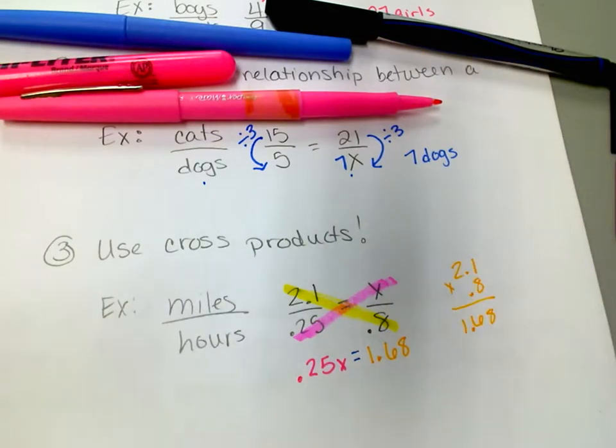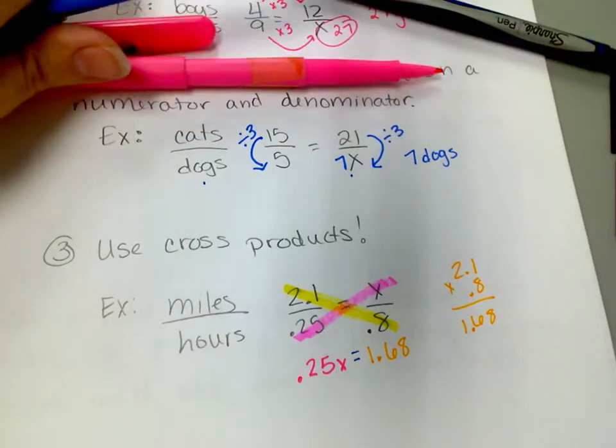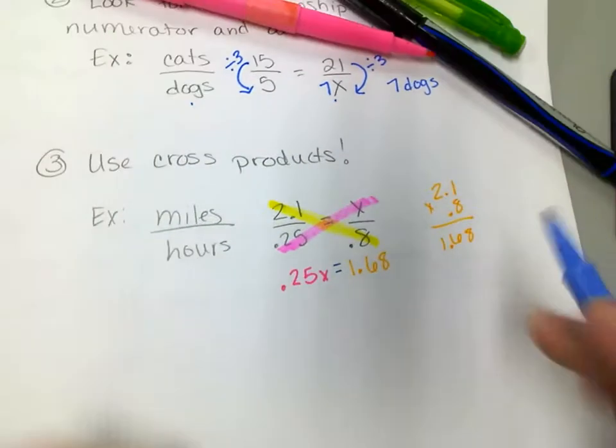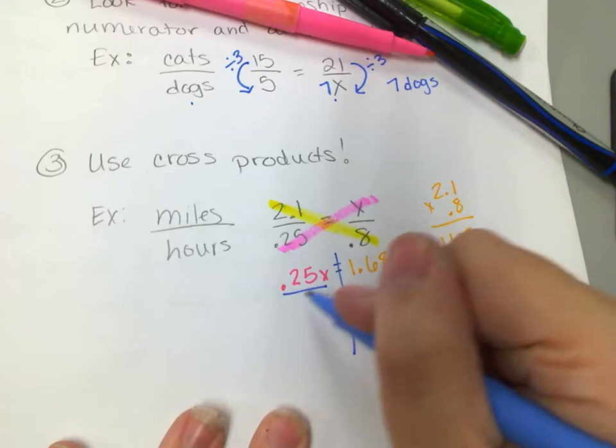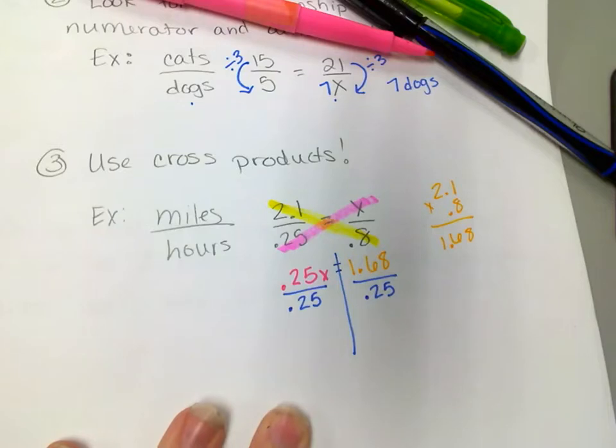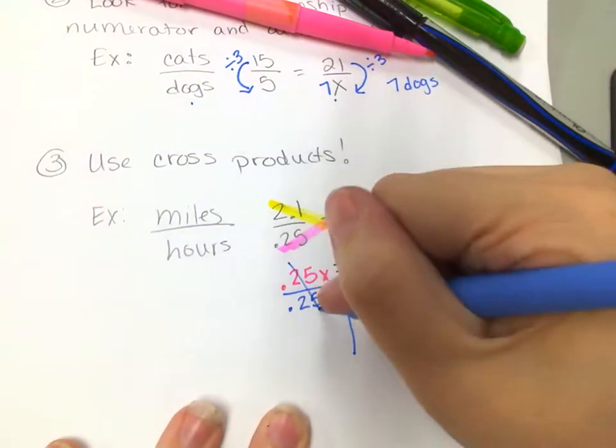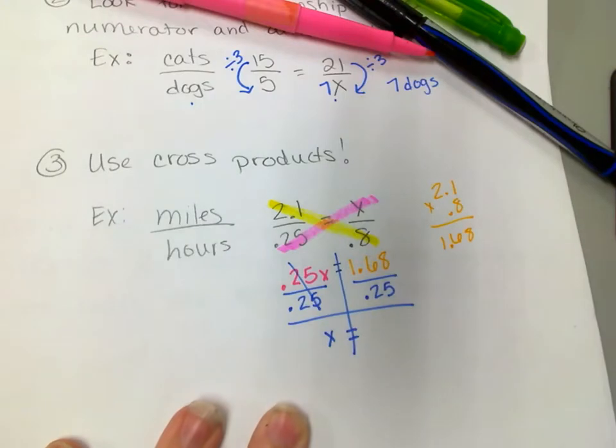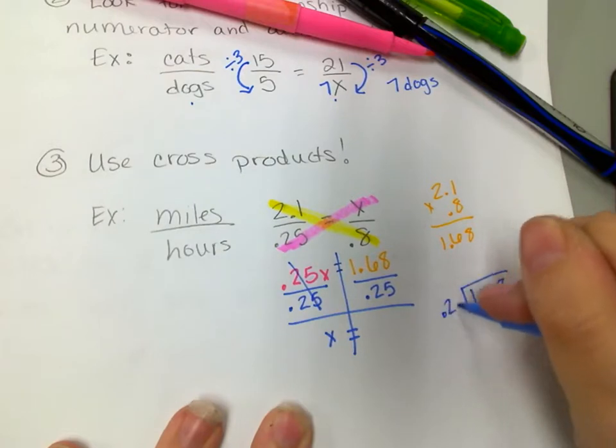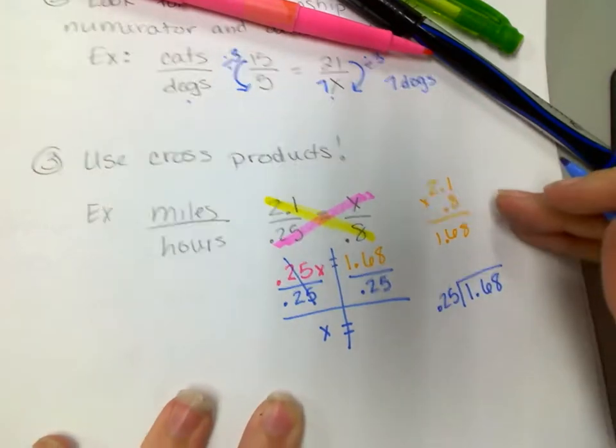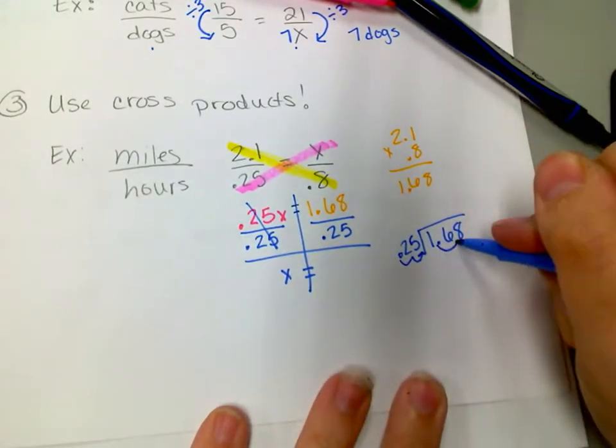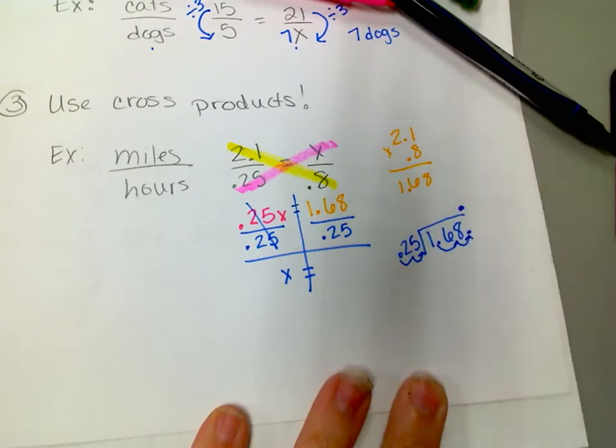So now to solve it, I would solve it like an equation. We've become pros at solving these equations, right? Because we've been doing it so much. So I'm going to draw my line. I know that I'm going to divide by 2.5, so I'm going to divide by 2.5. That cancels out, and we move x equals, and now I need to do my division. So 1.68 divided by 2.5—I have to get that decimal out of the divisor. So I'm going to move it two places to get it out, which means I need to move this one two places, and then bring it up.